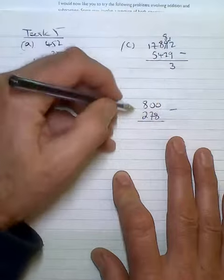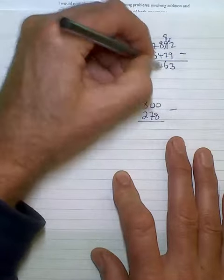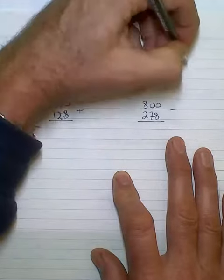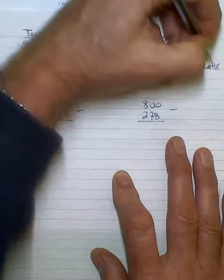So 12 from 9 is 3, 8 take 2 is 6, 8 take 4 is 4, 7 take 5 is 2 and 12. Now that's adults so remember to write the units to the right.